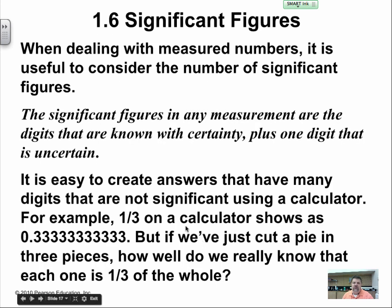When dealing with measured numbers, it is useful to consider the number of significant figures. The significant figures in any measurement are digits that are known with certainty plus one digit that is uncertain. It is easy to create answers that may have digits that are not significant using a calculator. For example, one over three on a calculator shows as 0.33333333.